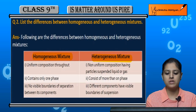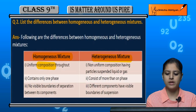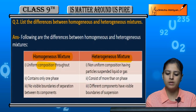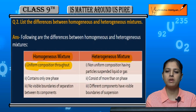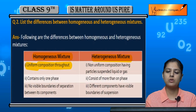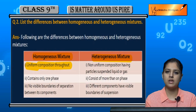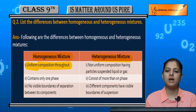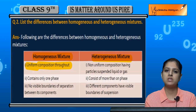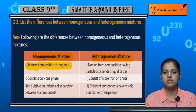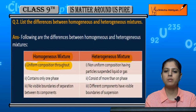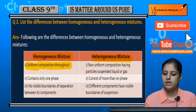The first difference: homogeneous mixtures have a uniform composition throughout. If we consider a homogeneous mixture, its composition is the same in every place — the same amount in every portion of the mixture. But in heterogeneous mixtures, the composition is non-uniform.